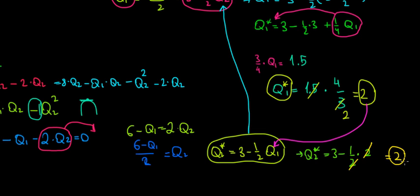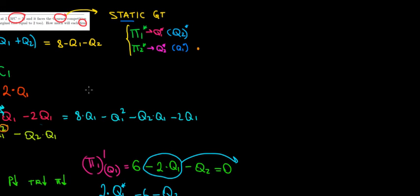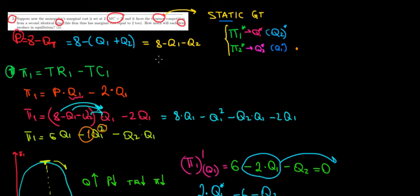Both firms' reaction functions were symmetric and both produce the same optimal output of two units each. To find the market price, we substitute into the price function: P = 8 - Q1 - Q2 = 8 - 2 - 2 = 4. So the equilibrium price in the market is four euros. In the next video, we'll see how this differs from Stackelberg, which is a dynamic rather than static game theory model.